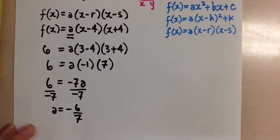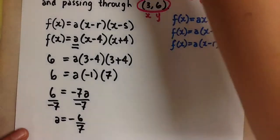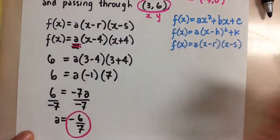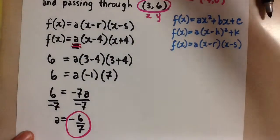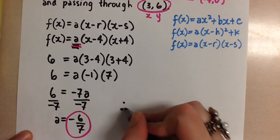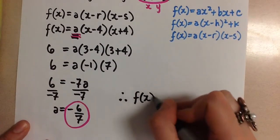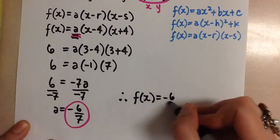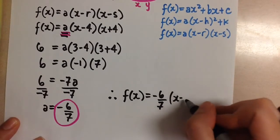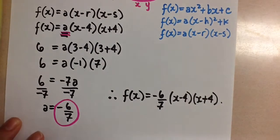So now, to finish this off, we're going to take that a value that we found here and sub it back in for the a value in the original equation. So the equation for this parabola that we were finding is f at x equals negative 6 over 7, x minus 4, and x plus 4.